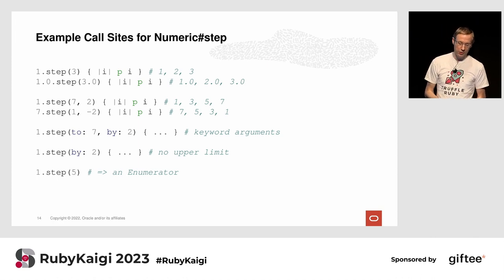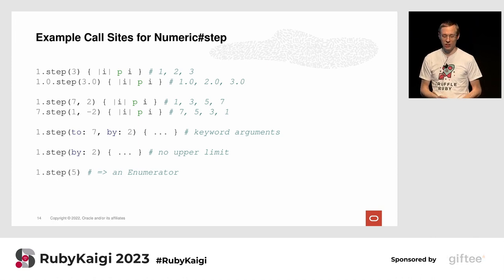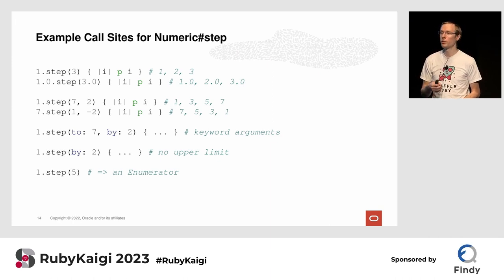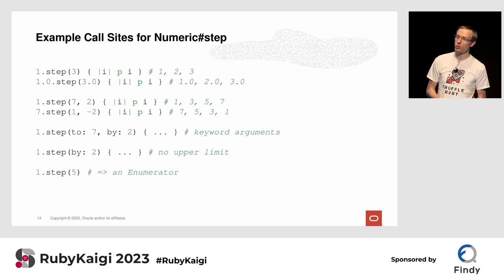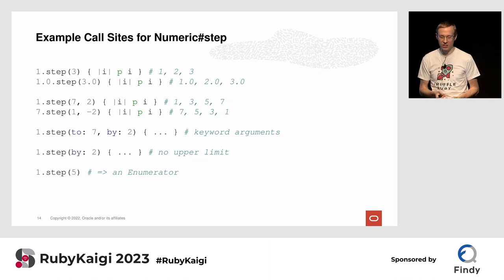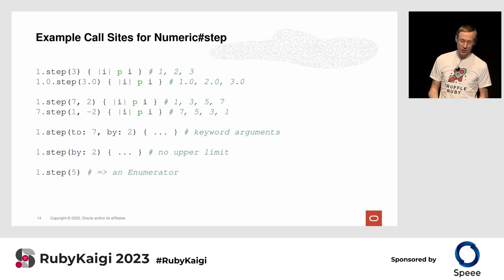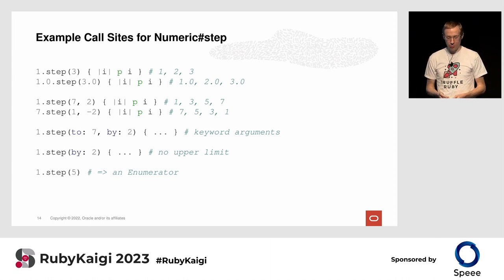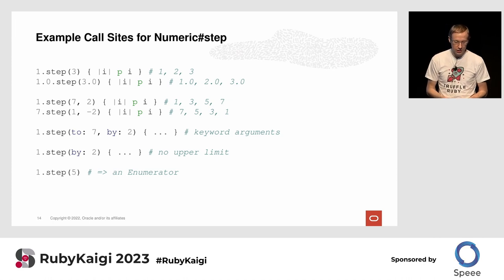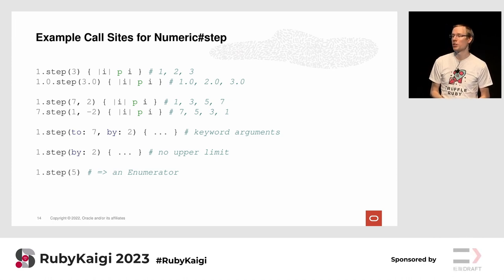Some examples: you can call 1.step(to: 3), step by two, or step by minus two for descending. You can also give keyword arguments — specifying 'to' and 'by' — and you can omit the step value and it will step to infinity. You can also call it without a block, which returns an Enumerator.